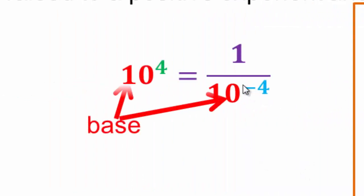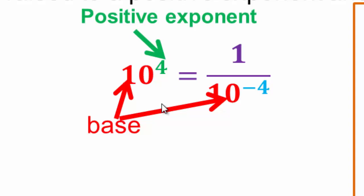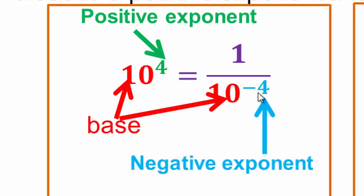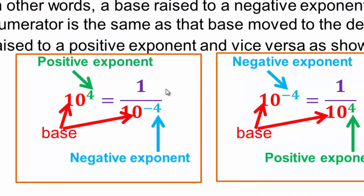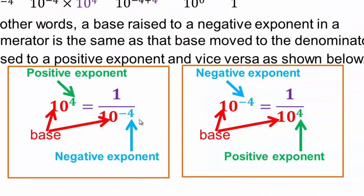Similarly, if you have a negative exponent in the denominator, the base moves from the denominator to the numerator — so a negative 4 power becomes a positive 4 power. Look very, very carefully: if your quantity is in the numerator with a negative exponent, you can take it to the denominator and make it a positive exponent. If it's already in the denominator, you can take it to the numerator and make it positive. We now know what negative exponents stand for.